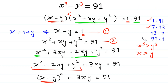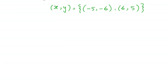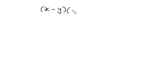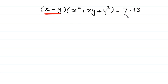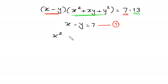Now we solve Case 2: 7 times 13. We write x minus y times x squared plus xy plus y squared equals 7 times 13. The smaller factor gives x minus y equal to 7 — Equation 1 — and the greater factor gives x squared plus xy plus y squared equal to 13 — Equation 2.